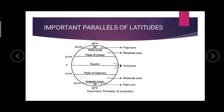The place between the Tropic of Capricorn and the Antarctic Circle — that place is called the temperate zone. Since it is at the south, it is called the South Temperate Zone.